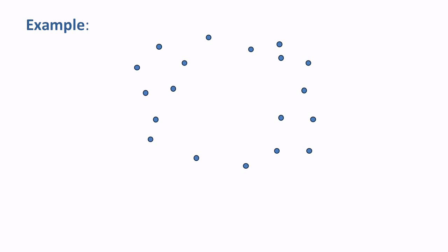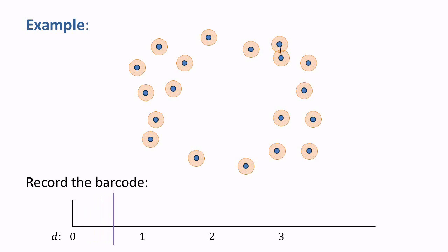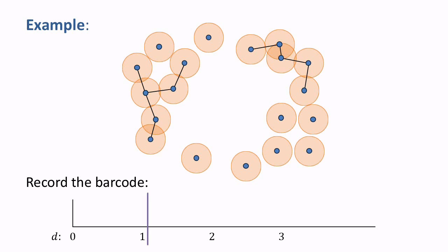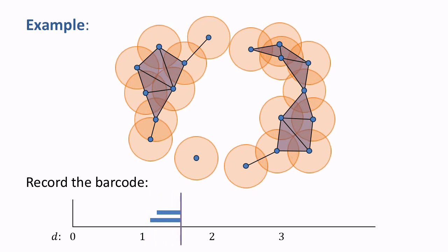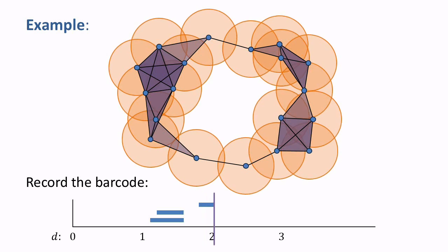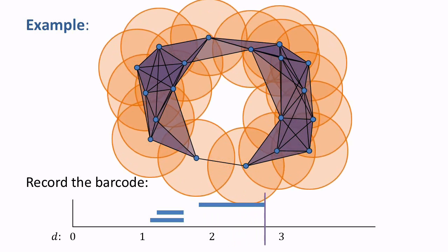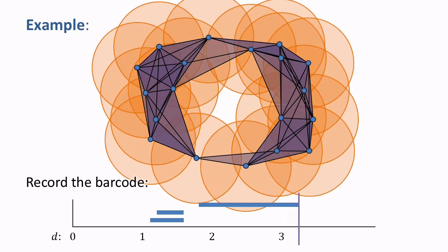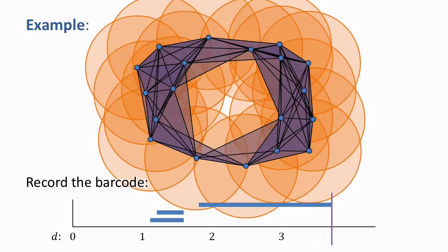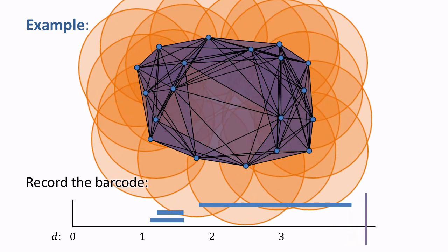Let's return to our point cloud example. We will create growing balls around each point and record the barcode. As the balls start to grow, edges begin to appear, and the complex gradually becomes connected. A few small holes appear, but quickly become filled in. The large, central hole appears, and remains as more and more two simplices appear around the outside. Eventually, as the balls get large, edges appear across the center of the hole, and it eventually gets filled in as well.